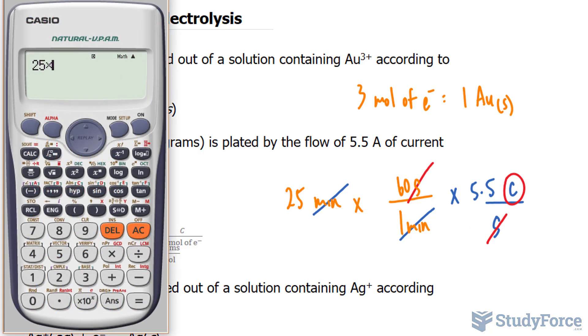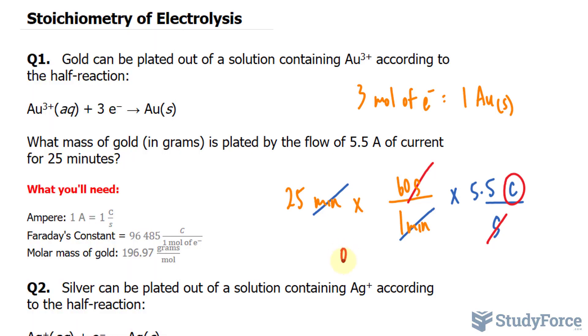Let's go ahead and calculate that: 25 times 60 times 5.5. Keep in mind that this number should be to two significant figures, although I'll write everything down since we're not done calculating. 8.250 times 10 to the power of 3 coulombs. So that is the amount of coulombs that is flowing within this 25 minute period.